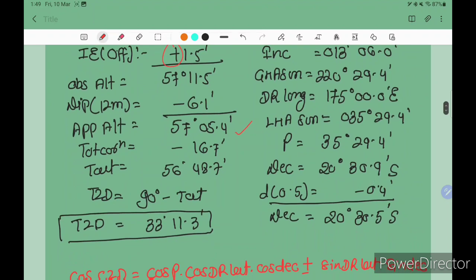Since it is upper limb, minus 16.7, we get true altitude 56 degrees 48.7 minutes. Now 90 minus true altitude gives us TZD, so we get TZD value 33 degrees 11.3 minutes.